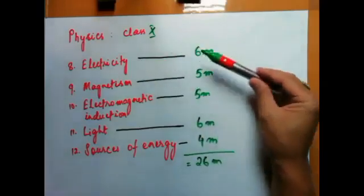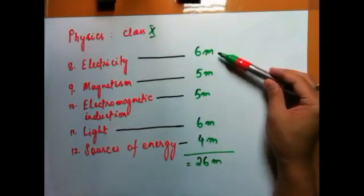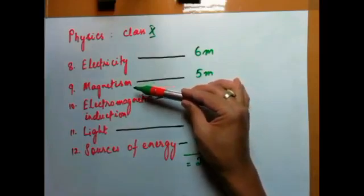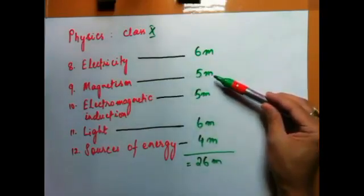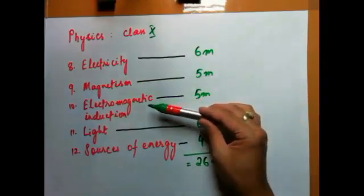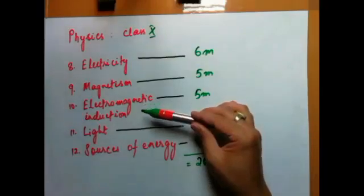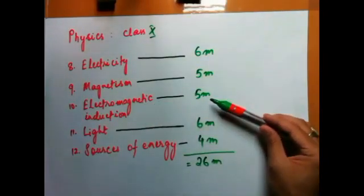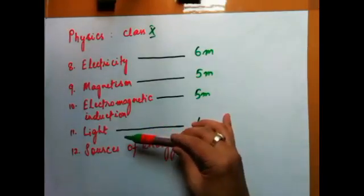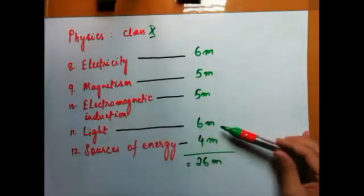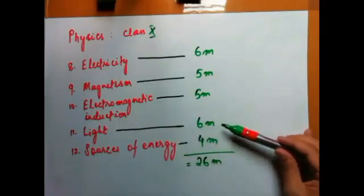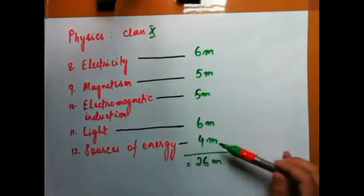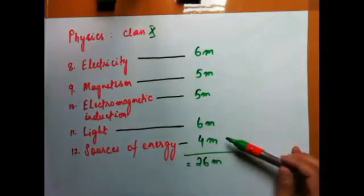Electricity carries 6 marks. Magnetism carries 5 marks. Electromagnetic induction carries 5 marks. We also have chapters on light and sources of energy, carrying 4 marks.